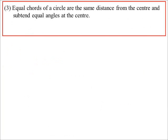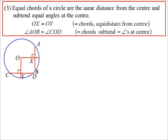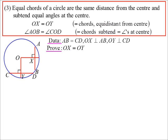Equal chords of a circle are the same distance from the center and subtend equal angles at the center. Let's prove these theorems. I have two chords: AB equals CD (equal chords), OX perpendicular to AB, and OY perpendicular to CD. I want to show they are equidistant: OX equals OY.